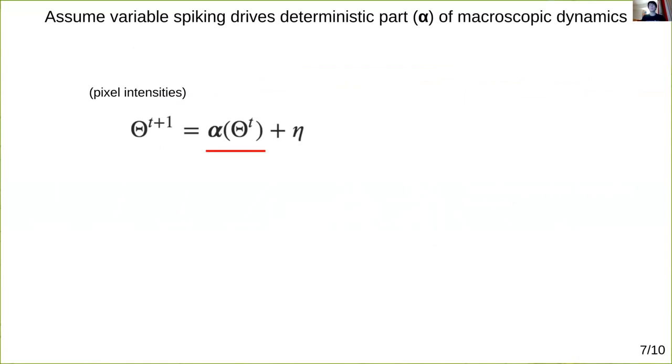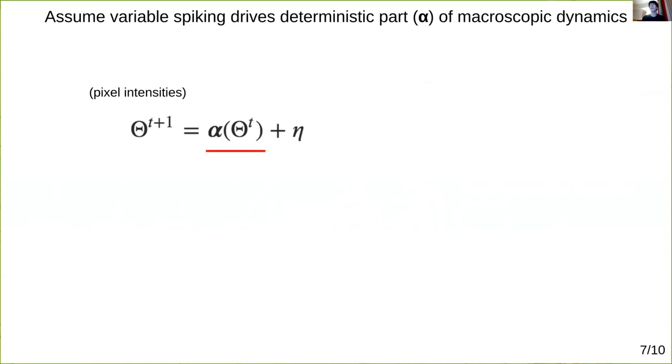So I won't derive everything, but the key to this analysis is to assume spiking is irregular and that its variability drives the deterministic part of the macroscopic dynamics. So we end up writing alpha in terms of the probability that a neuron's input from its pixel is greater than other neurons inputs from their pixels.